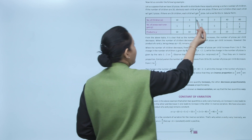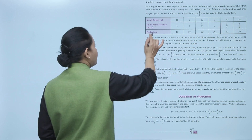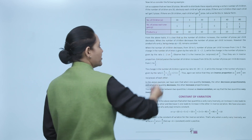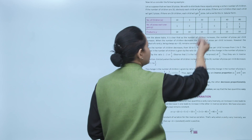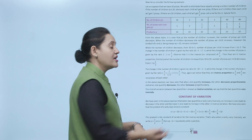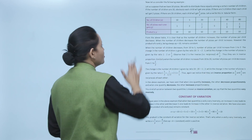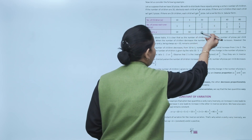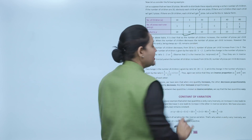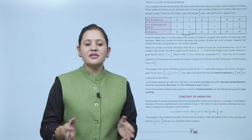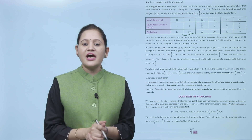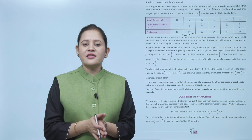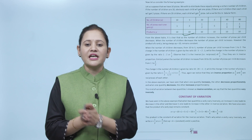Writing in tabular form: number of children — 10, 5, 20, 2, 40, 80; pizzas per child — 1, 2, 0.5, 5, 0.25, 0.125. The product x×y: 10×1=10, 5×2=10, 20×0.5=10 — the product always remains constant at 10. As the number of children increases, the number of pizzas per child decreases, and vice versa.